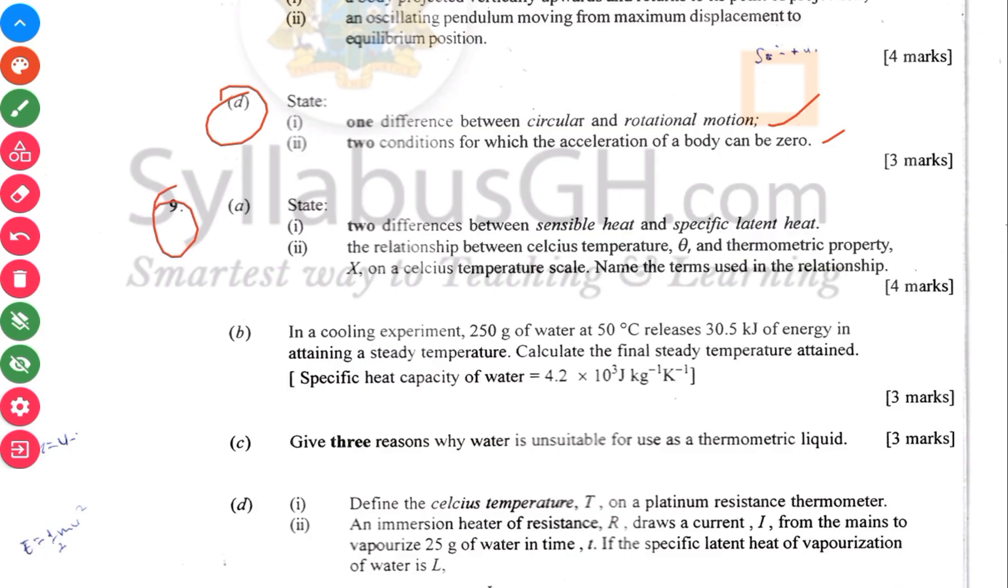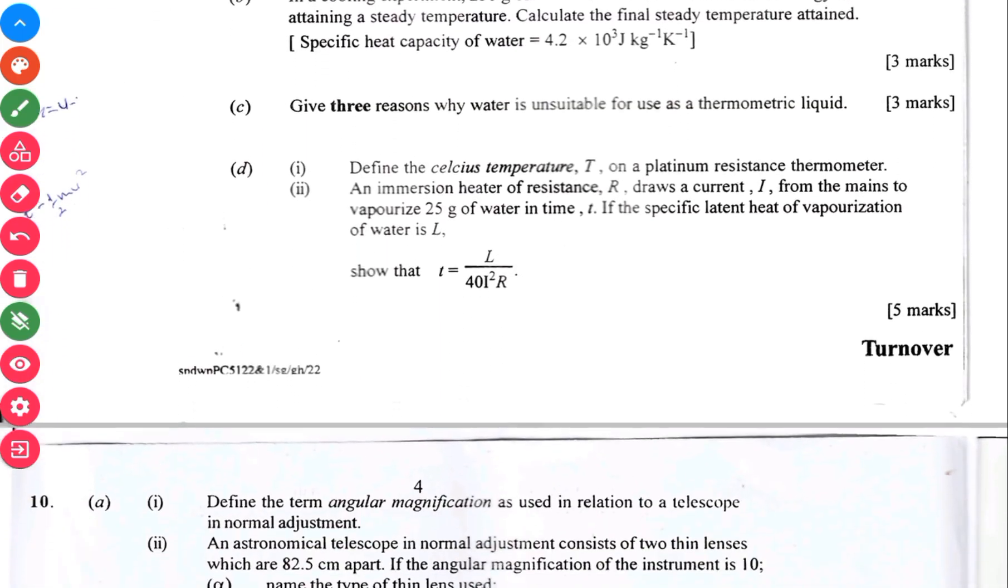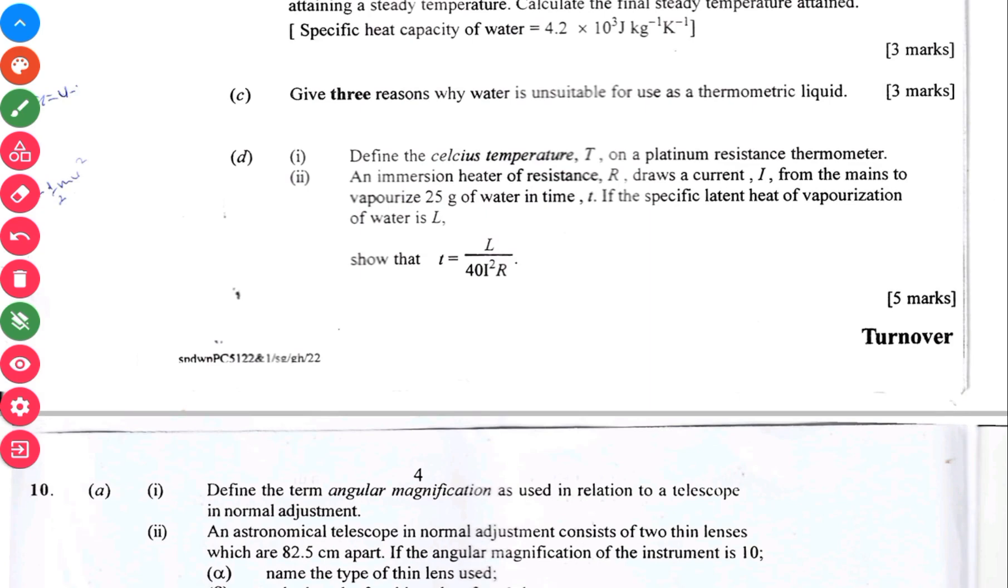Number 9 here has to do with heat. The whole of number 9 has to do with heat. Then here you are asked to calculate the steady temperature. Then C has to do with three reasons why water is unsuitable as a thermometric liquid, why water cannot be used in a thermometer. Then D as well has to do with heat.